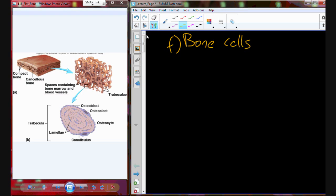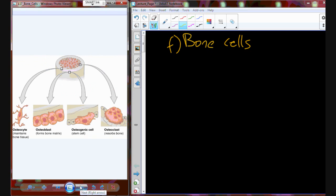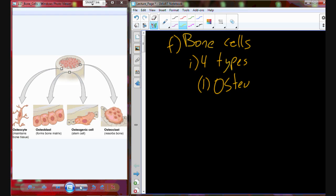Alright, so bone cells. There are four types of bone cells or cells that we're going to find through bone tissue. Those four types - we're going to have osteoprogenitor cells. The osteoprogenitor cells, you may refer to them as stem cells or bone specific stem cells. These are going to be cells that actually give rise to all the other types of cells.